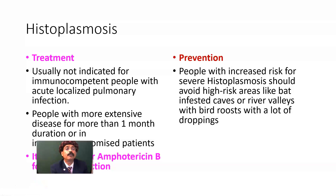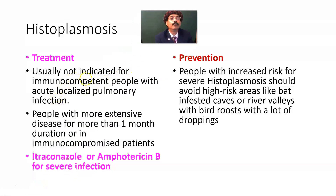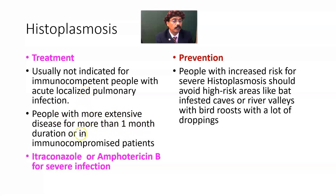Treatment is usually not required for immunocompetent people with short or asymptomatic disease or localized pulmonary infection — they will recover without treatment. For people with more extensive disease lasting more than one month, or immunocompromised patients, antifungal drugs are needed: Itraconazole, possibly Ketoconazole, or Amphotericin B for severe cases.